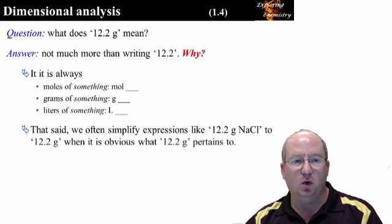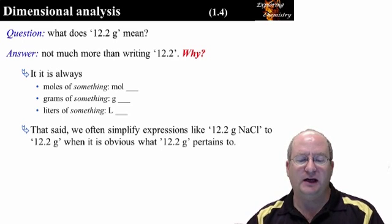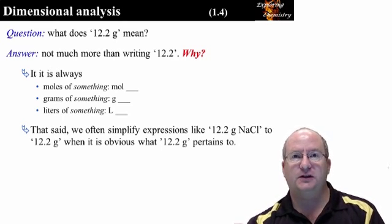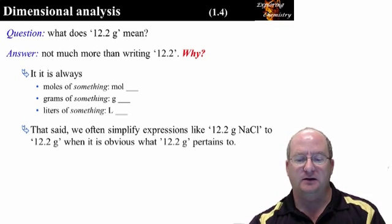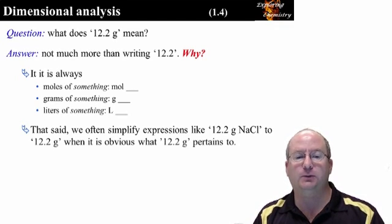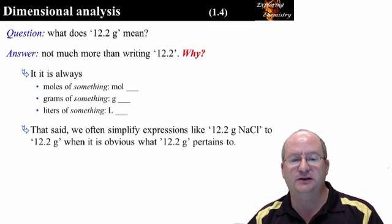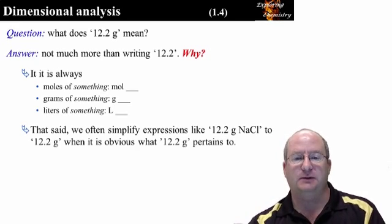You must specify what is being referred to. It is always moles of something, grams of something, volume of something. However, I must admit that as chemists, you will sometimes see simplifications like 12.2 grams. This is only acceptable if it is obvious what entity this measurement refers to. You've probably started doing this in high school, which is fine, but you need to be sure that whoever is reading your report or your exam isn't confused by your simplification. Imagine being a physician and writing a prescription for 400 milligrams. Of what? It is your responsibility to be clear in the documents you prepare.